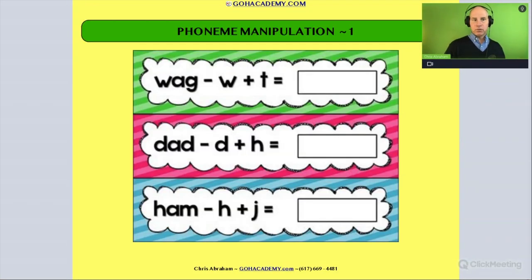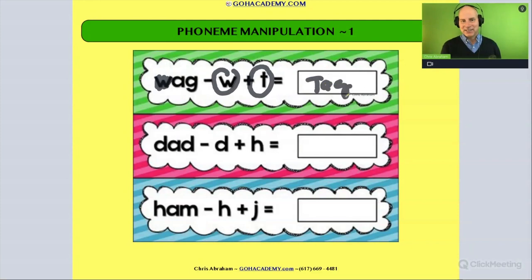The first one involves manipulation where we add and delete a sound and change it. Here we have the word 'wag' and the student identifies the first sound 'wuh.' We're going to take that sound out, delete it, and change it for 'tuh.' So we delete a sound, then substitute a sound, and get the new word 'tag.'